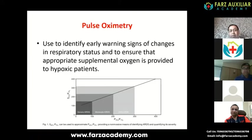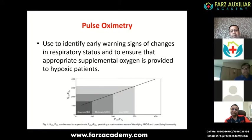Coming straight to pulse oximetry — this is the simplest tool we use most frequently. In a COVID scenario, we are also using it at home. For patients on invasive ventilation, while we use blood gases to define the severity of hypoxia, it is cumbersome, painful, and costly to do ABGs repeatedly. So we rely on SpO2, which gives maximum information even in emergency scenarios, and we should not wait for the blood gas result.